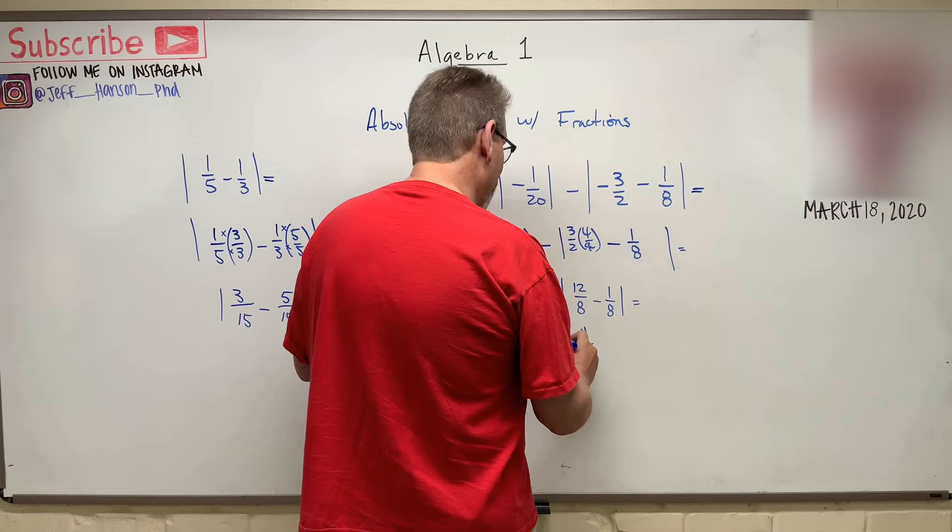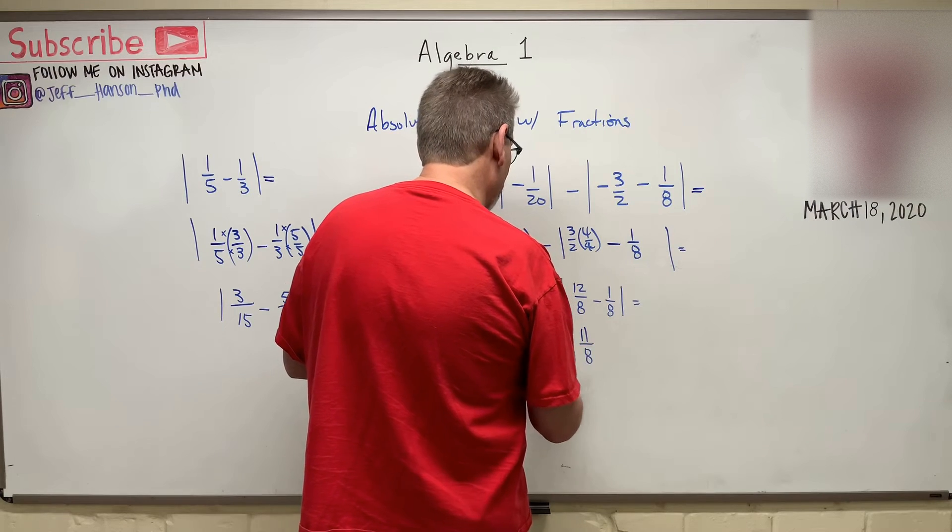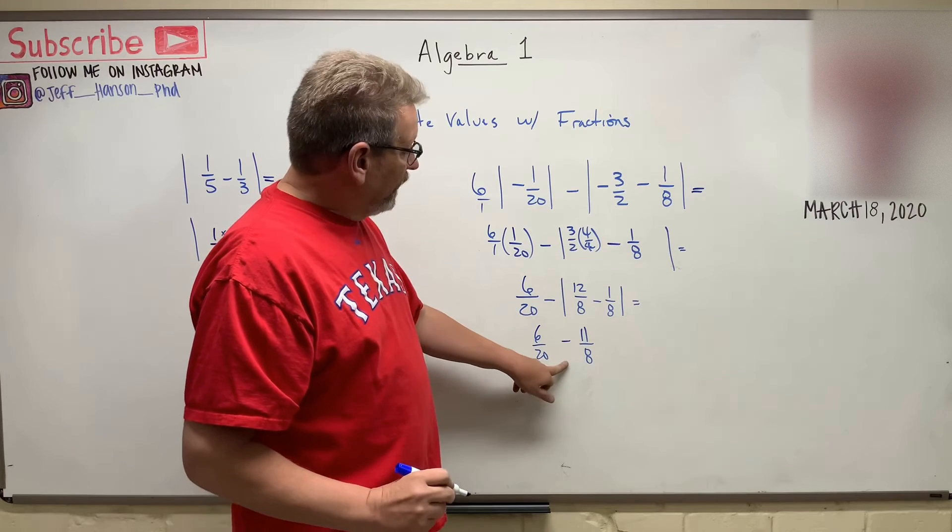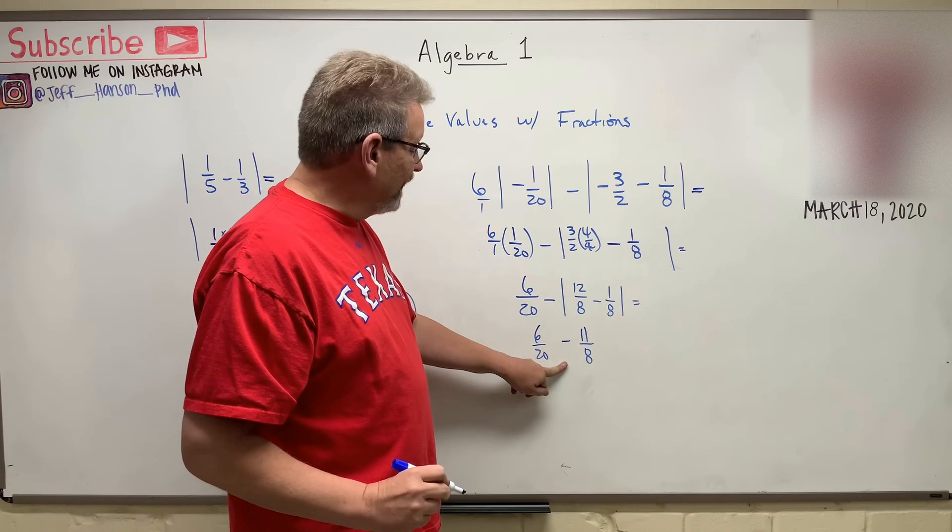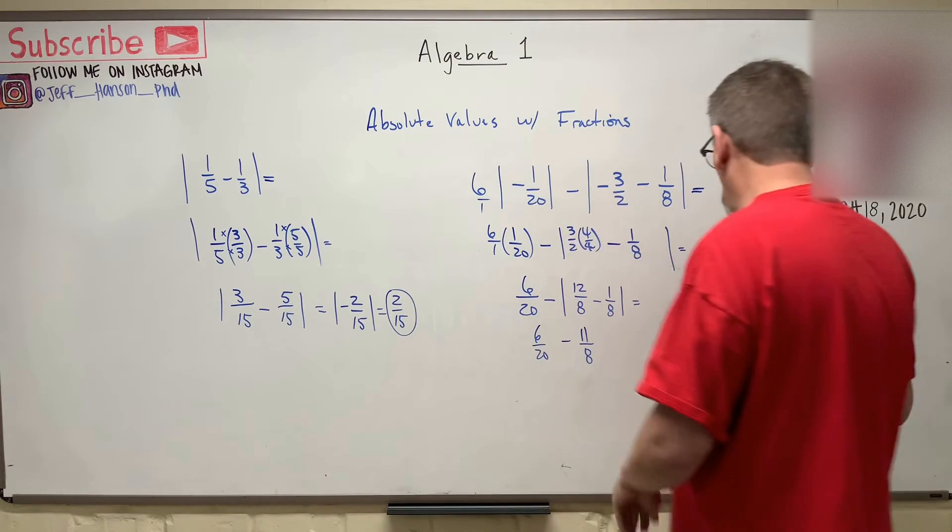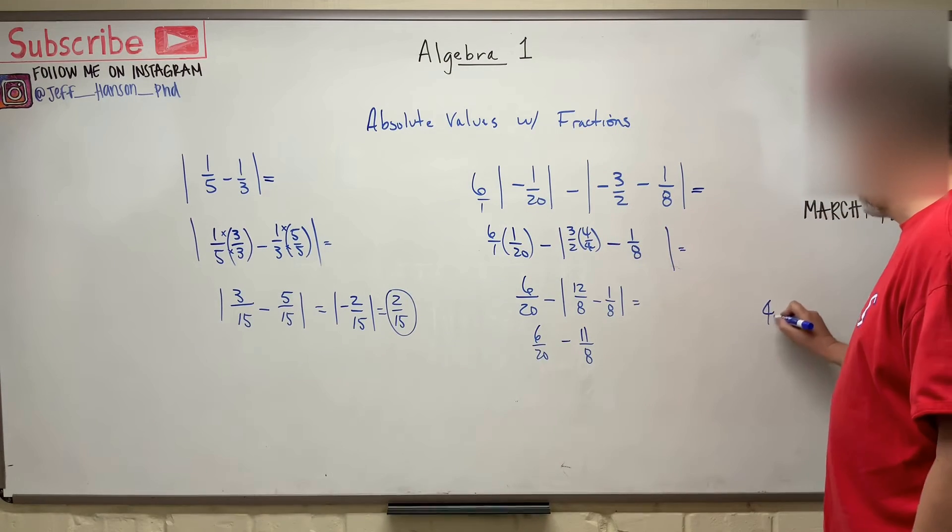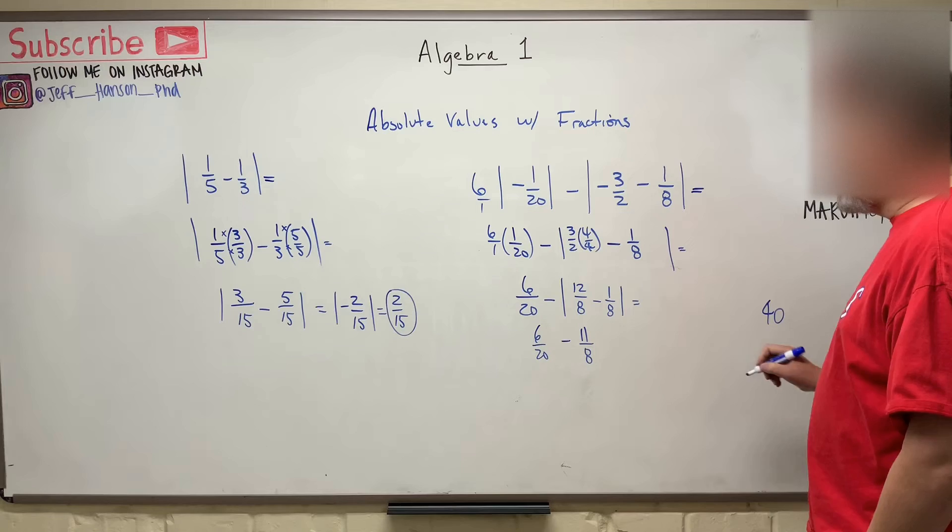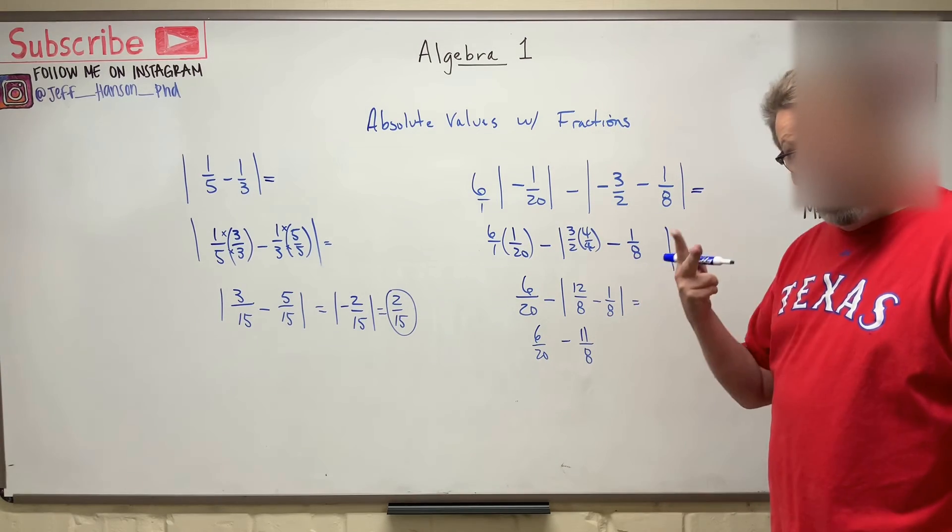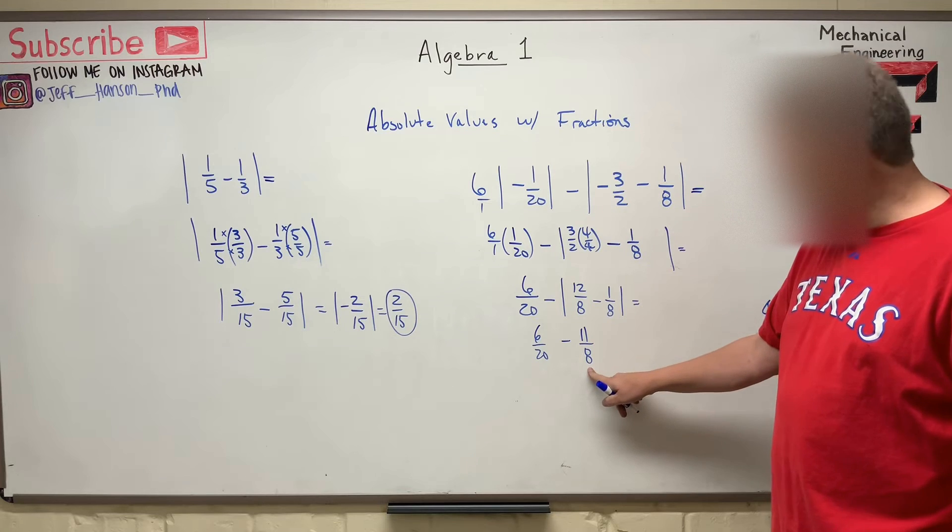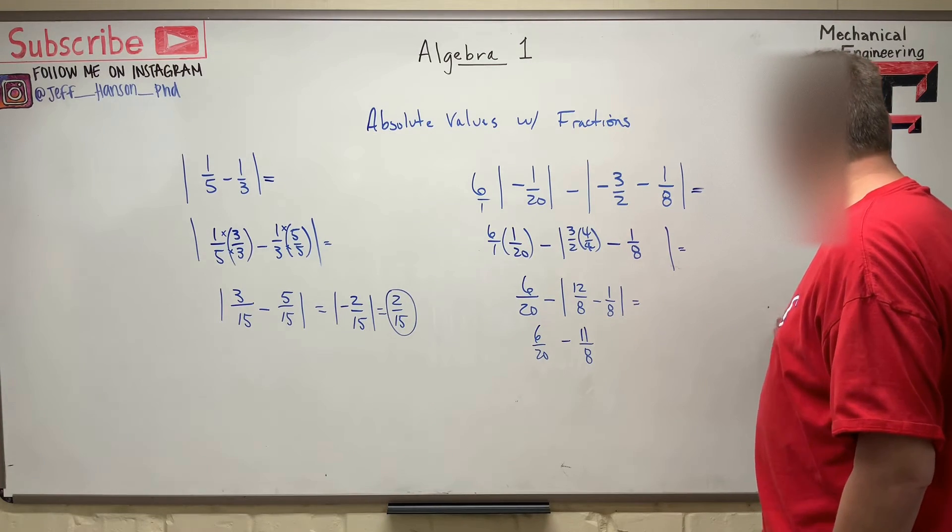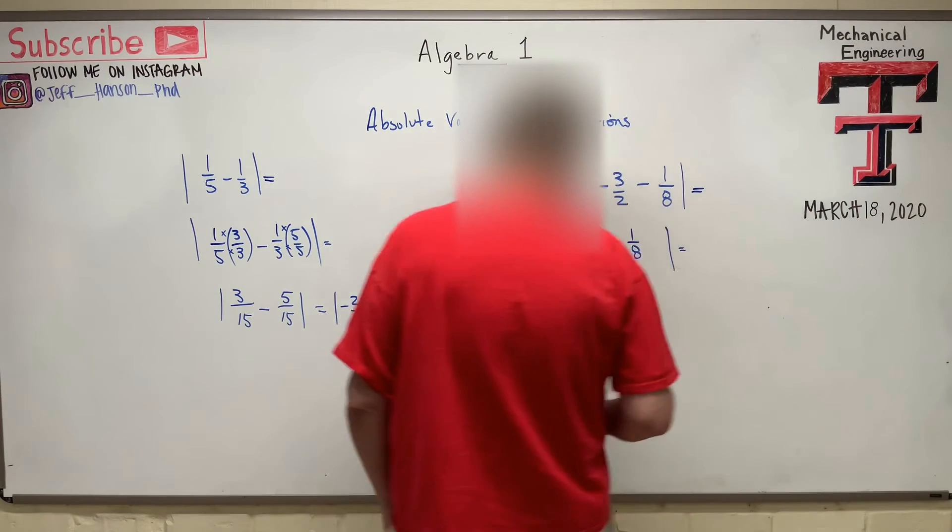And so minus 6 over 20. And what's the least common multiple for these guys? The least common multiple here is 40. Because how many times you have to multiply 20 to get 40? 2. How many times you have to multiply 8 to get 40? 5. So 40 is our number here.